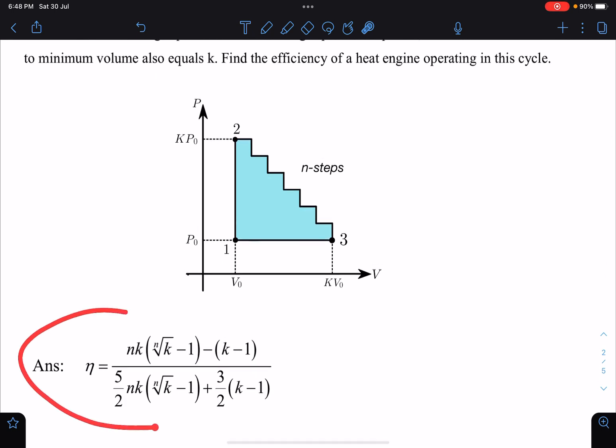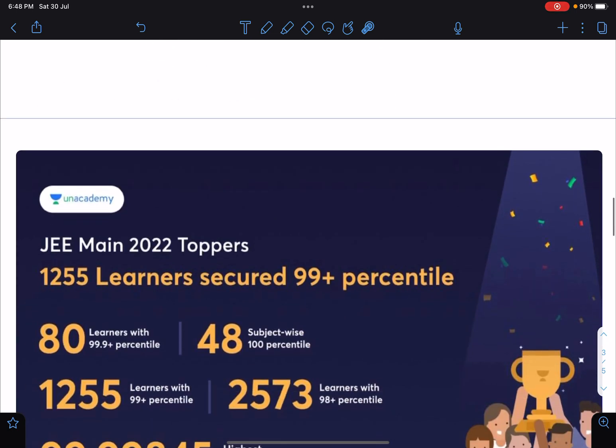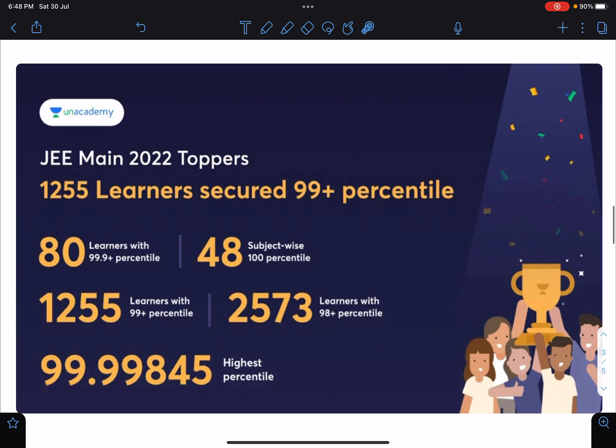Let's see how many people will get the right answer. This is JEE 2022 first session results. More than 1250 learners have secured 99+ percentile and 80 learners with 99.9+ percentile.